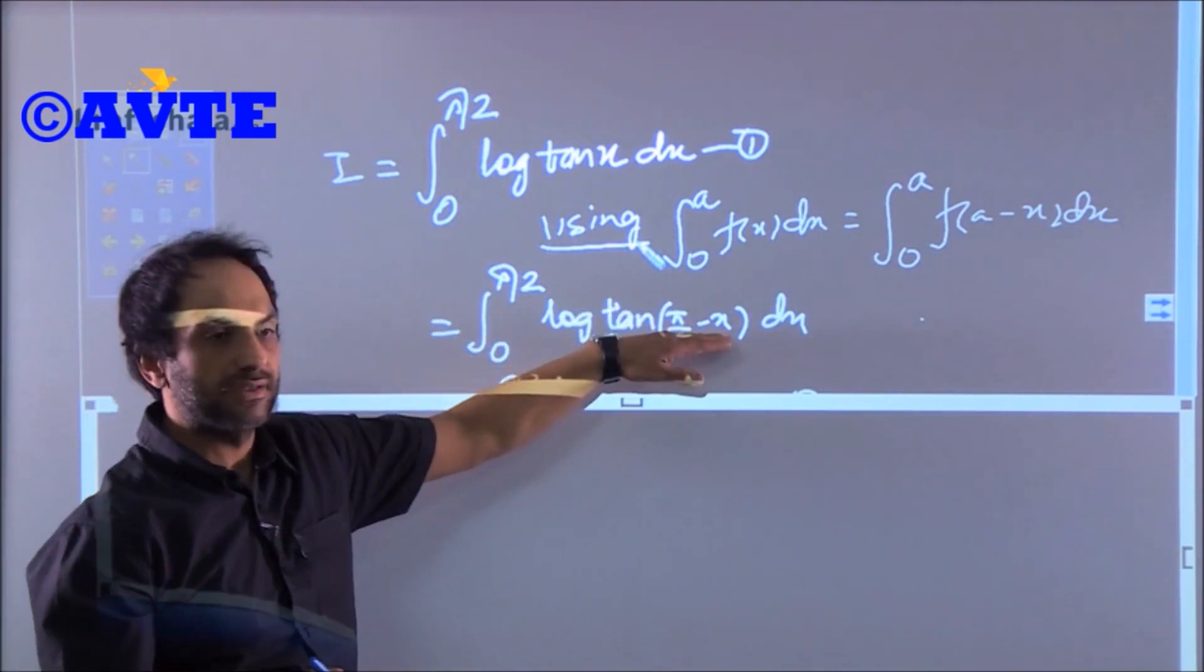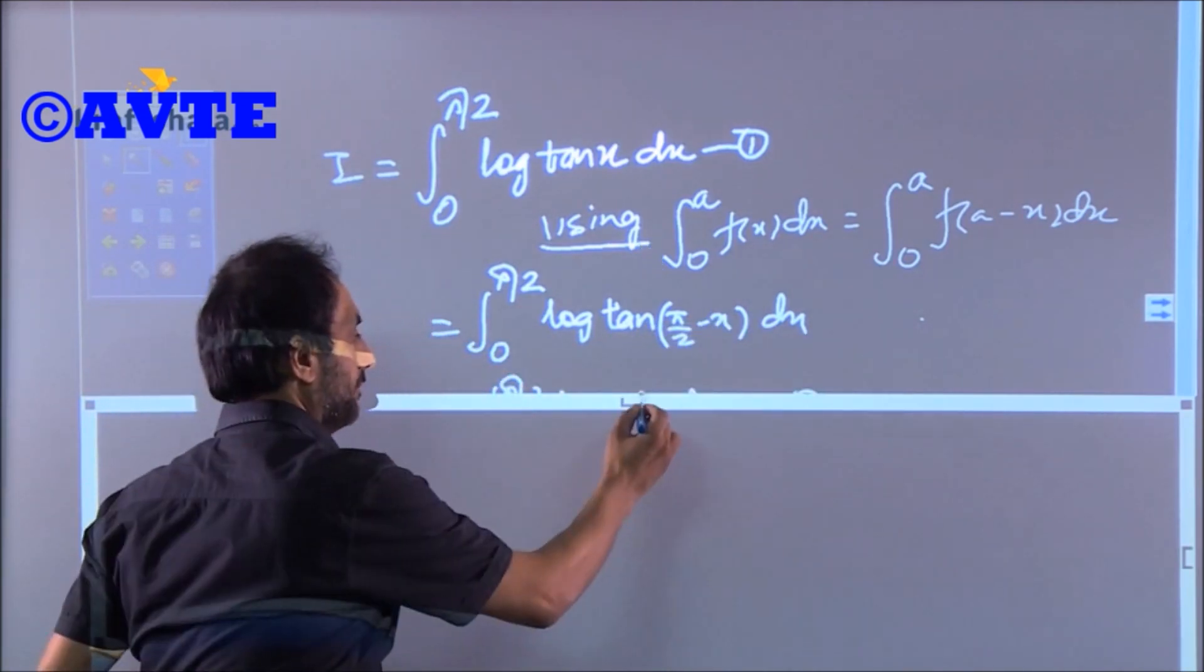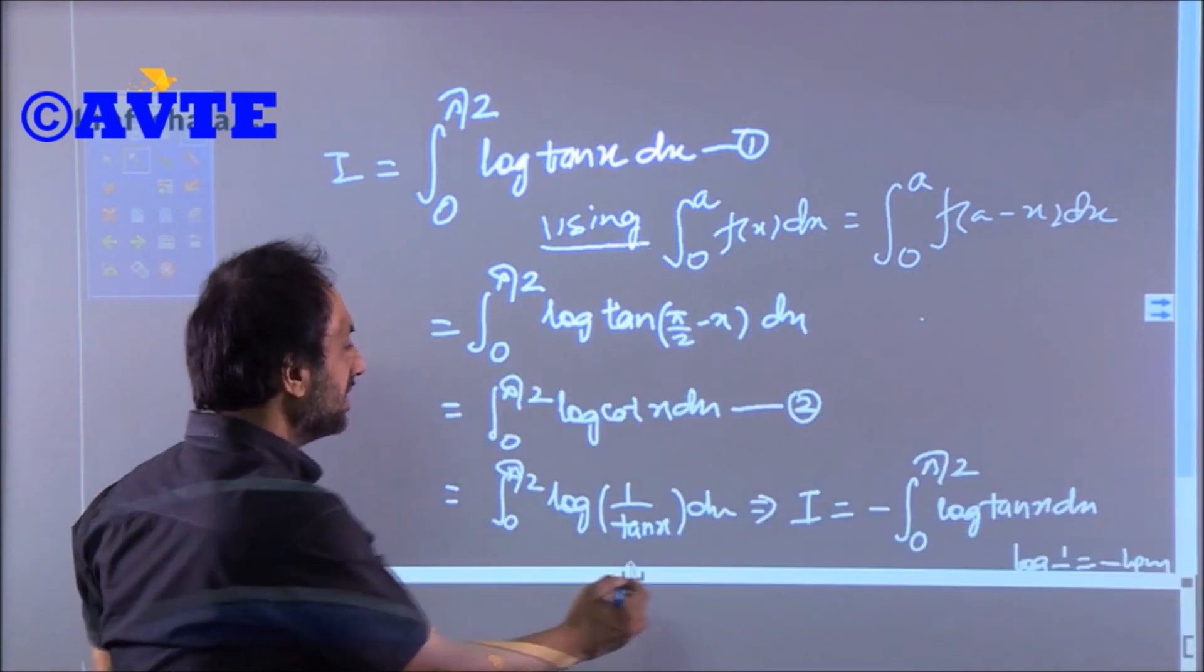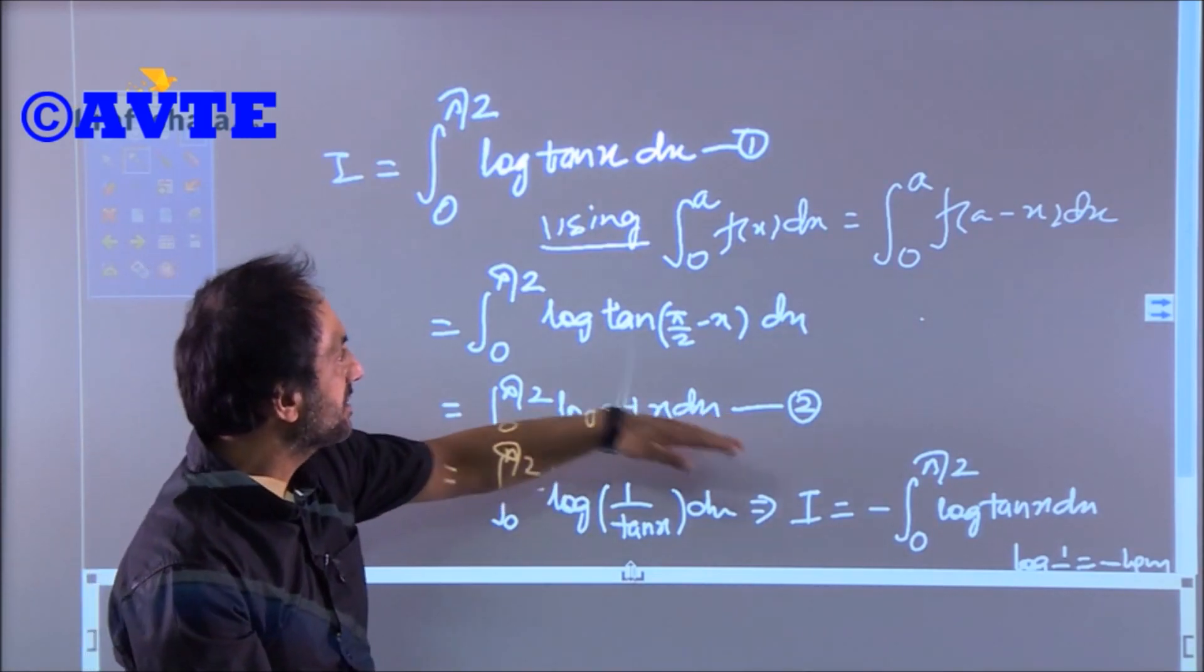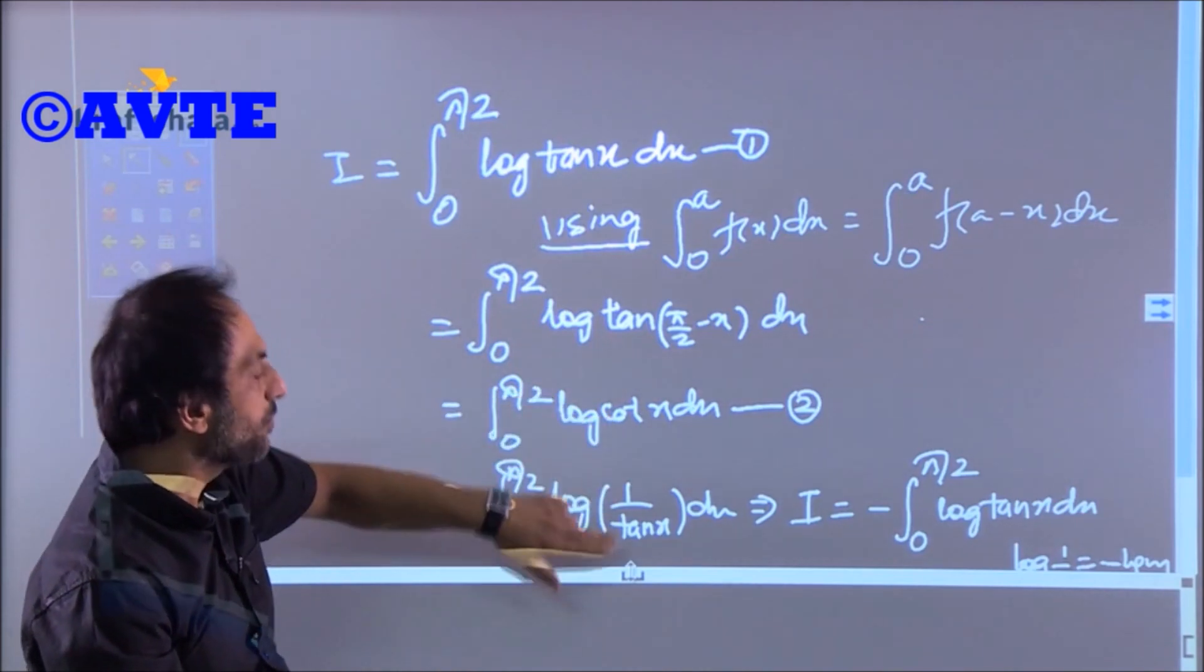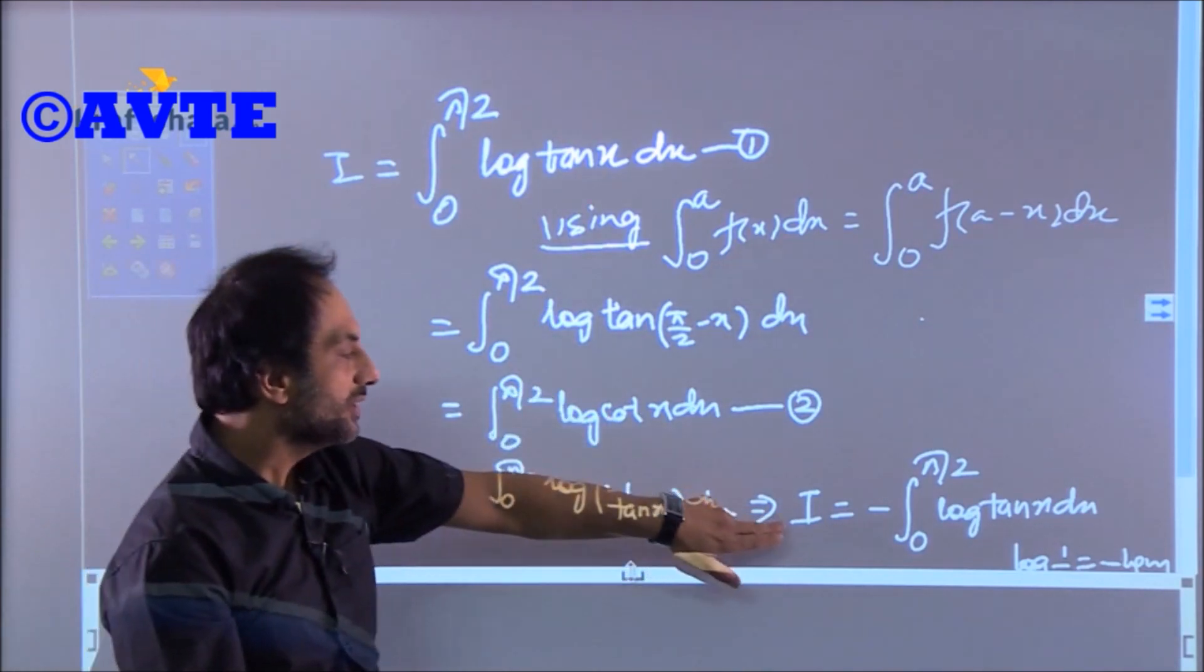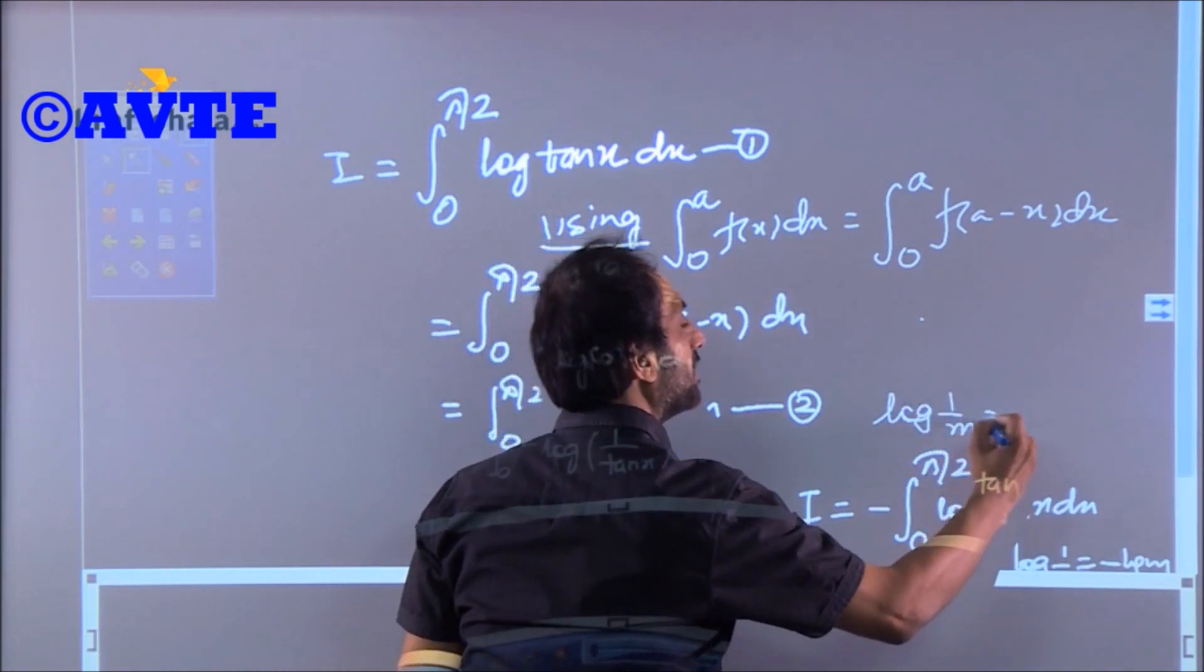log tan(90-x): tan(90-x) will turn to cot x. We can add them to get ∫₀^(π/2) log cot x dx. Or I can write cot as 1/tan x, and you know the property that log(1/m) = -log m. So this becomes -log tan x dx.